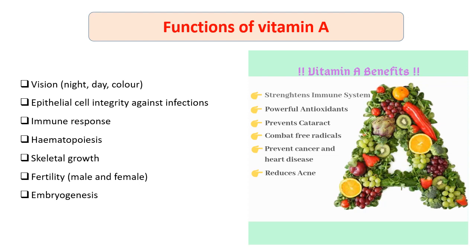The functions of vitamin A include an enormous role in vision — night vision, day vision, and color vision. It maintains epithelial integrity, thereby fighting infection, and boosts immune response. It also has a role in hematopoiesis, skeletal growth, and fertility in both male and female, as well as embryogenesis. Additionally, vitamin A is a potent antioxidant that combats free radicals, thus helping prevent cancer, heart disease, reducing acne, and strengthening the immune system.